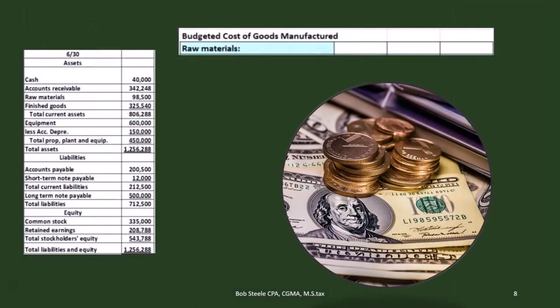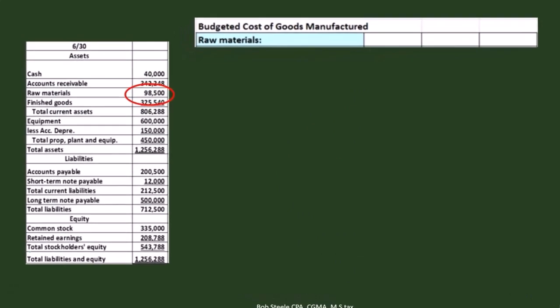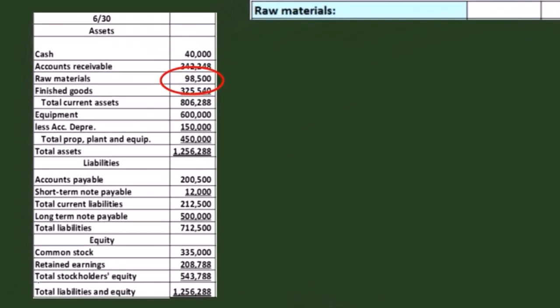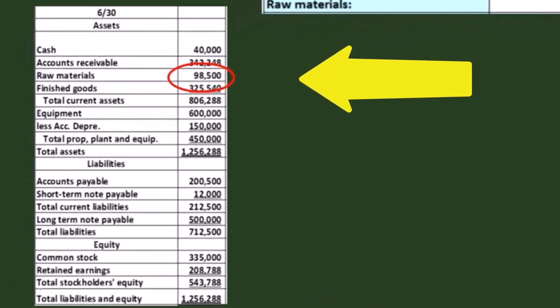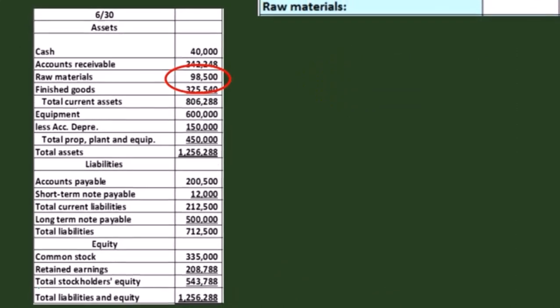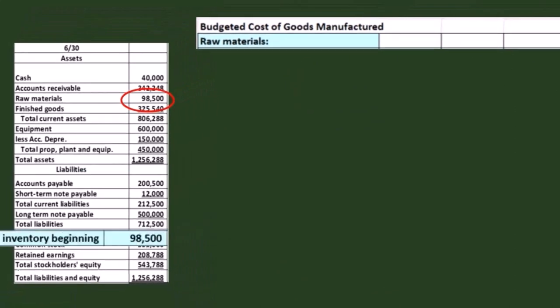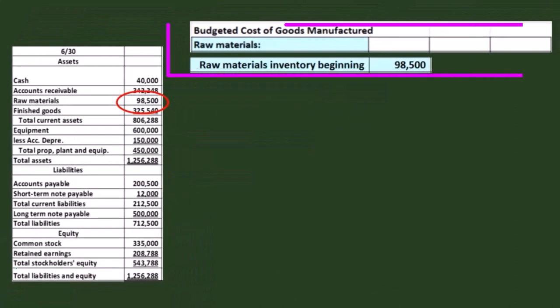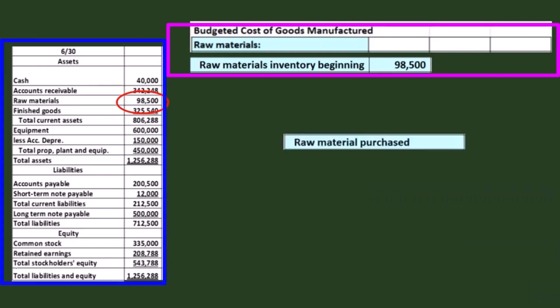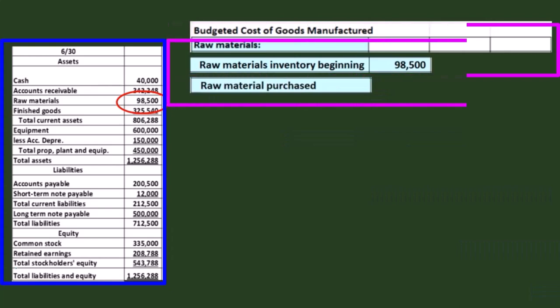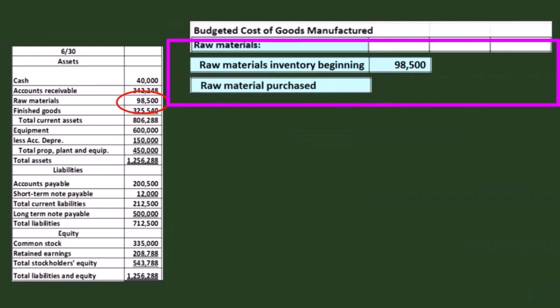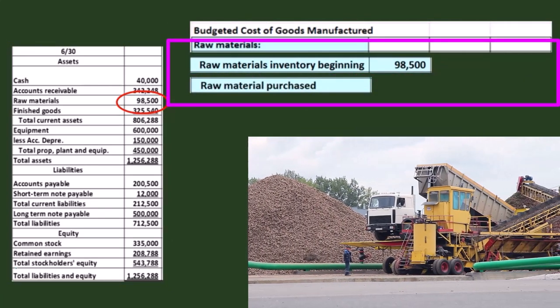Here we have the cost of goods manufactured. We're going to start off with raw materials pulled from the balance sheet from the prior period. Beginning raw materials will, of course, be the same as the ending raw materials in the prior period, so we can get that from the prior period financials. Then we have the raw materials we're going to purchase.